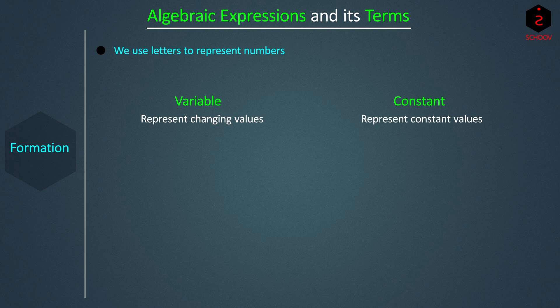When we don't know the number, we use a letter to represent it. When we know the number — for example, 14 — we just write the number and don't use a letter. Usually, we use letters X, Y, Z, etc. for variables, and A, B, C, P, Q, R, etc. for constants.